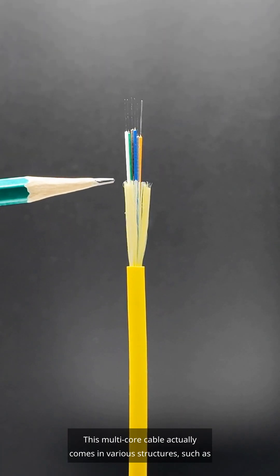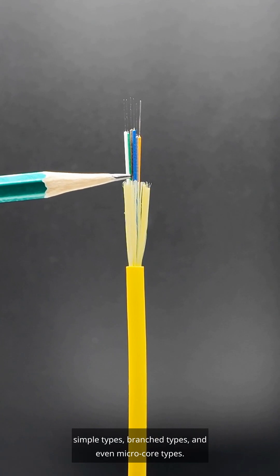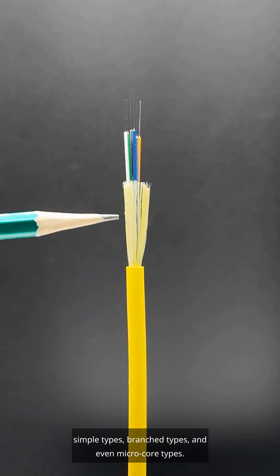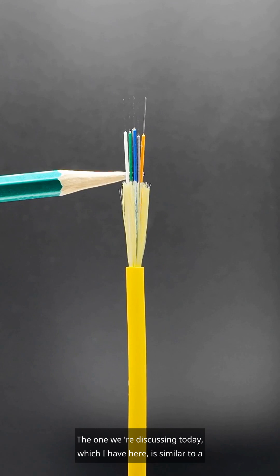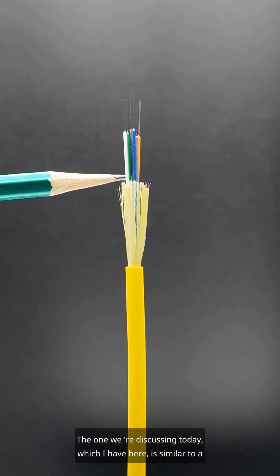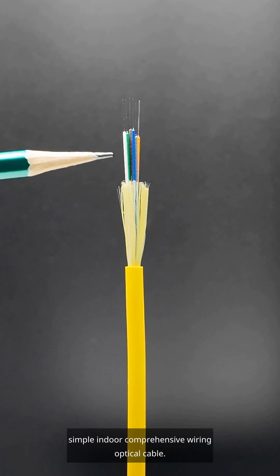This multi-core cable actually comes in various structures, such as simple types, branch types, and even micro-core types. The one we're discussing today, which I have here, is similar to a simple indoor comprehensive wiring optical cable.